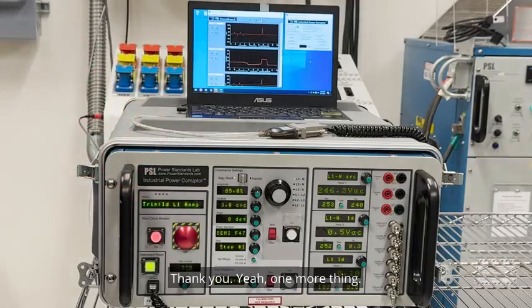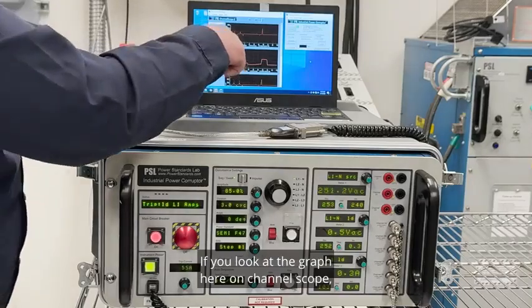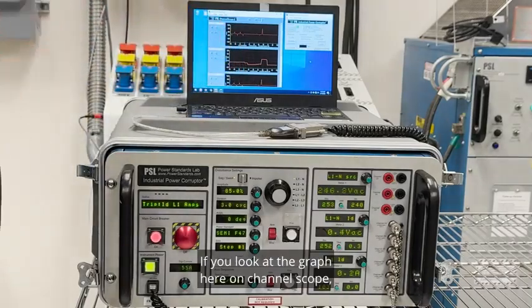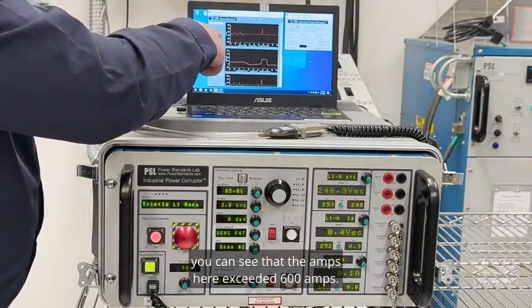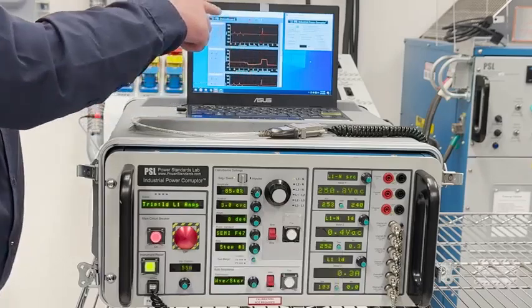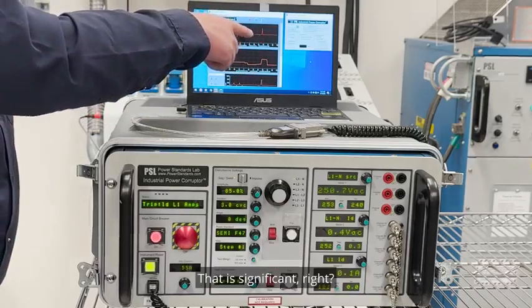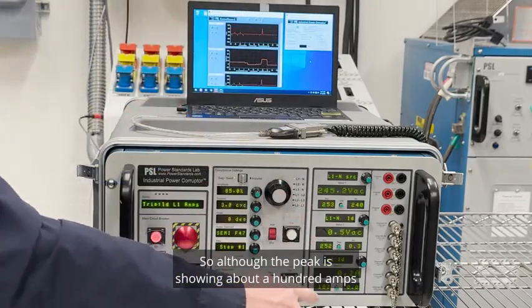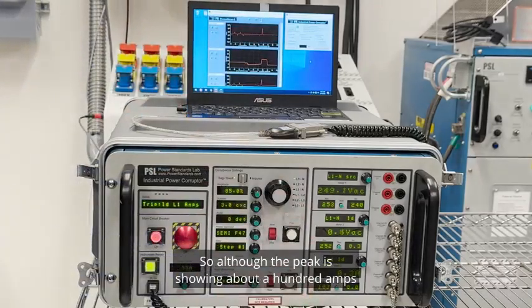Yeah, one more thing. If you look at the graph here on channel scope you can see that the amps here exceeded 600 amps. That is significant. So although the peak is showing about a hundred amps on the meter here, channel scope has picked up the characteristics of this.